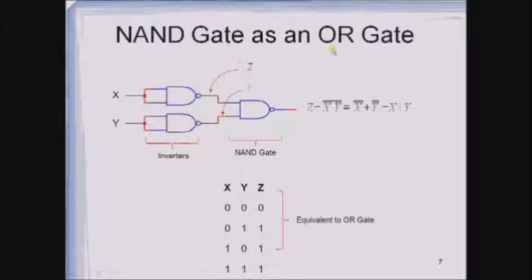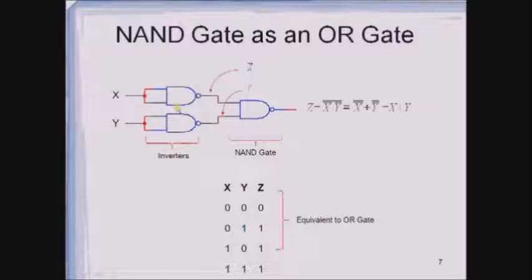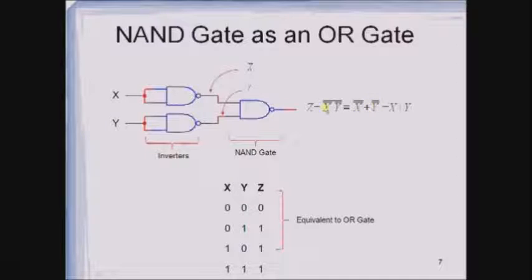Now let us implement an OR gate with the help of NAND gates. The output of OR gate is X plus Y. Two NAND gates each have their inputs tied together — one receiving input X and the other receiving input Y — acting as inverters, giving outputs X bar and Y bar. These outputs are connected as inputs to one more NAND gate, giving output X bar Y bar whole bar. Applying De Morgan's theorem gives X plus Y, which resembles the OR gate. This is the symbol used for representing the OR gate with NAND gates.